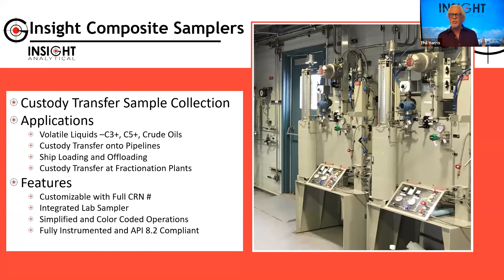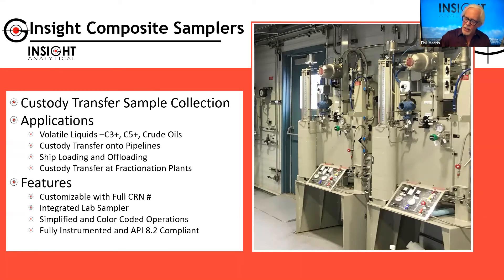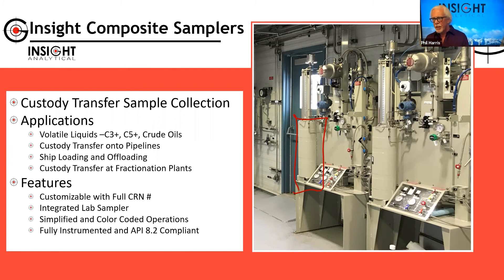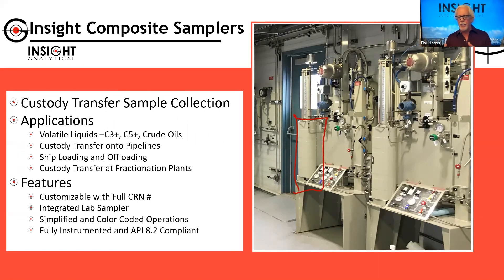Clients came to us wanting composite samplers that meet Canadian requirements like CRN and CSA, but are completely customizable for different applications. We designed these liquid composite samplers — typically featuring a large accumulator vessel that slowly fills over days, weeks, or even a month. It provides a composite or average sample of the fluid flowing by. For example, on a pipeline, for every 50 barrels that passes we put a milliliter into the vessel. Another client loads propane onto ships bound for Japan; it takes about three and a half days to load, and the vessel fills over that period so the average built up represents exactly what went onto that ship.